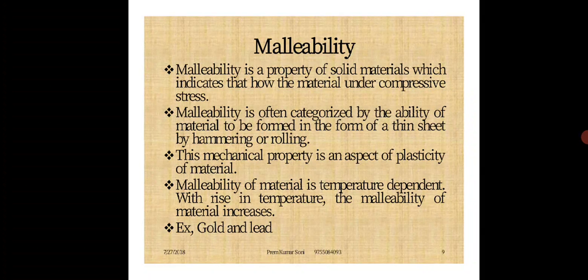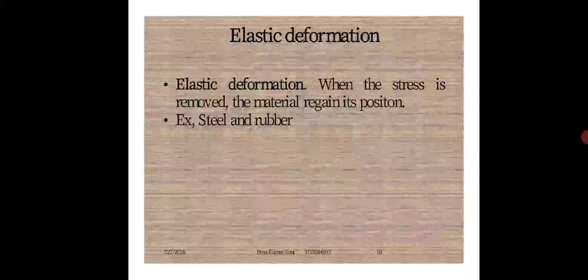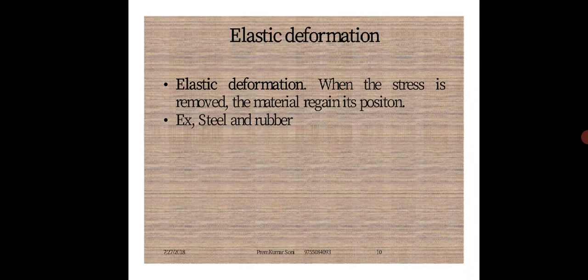Next is Elasticity. Elasticity is the property of a material by virtue of which it is able to retain its original shape and size after the removal of load. Examples of elastic materials are steel and rubber. The material can regain its position when the applied load is removed — that is the property of elasticity.